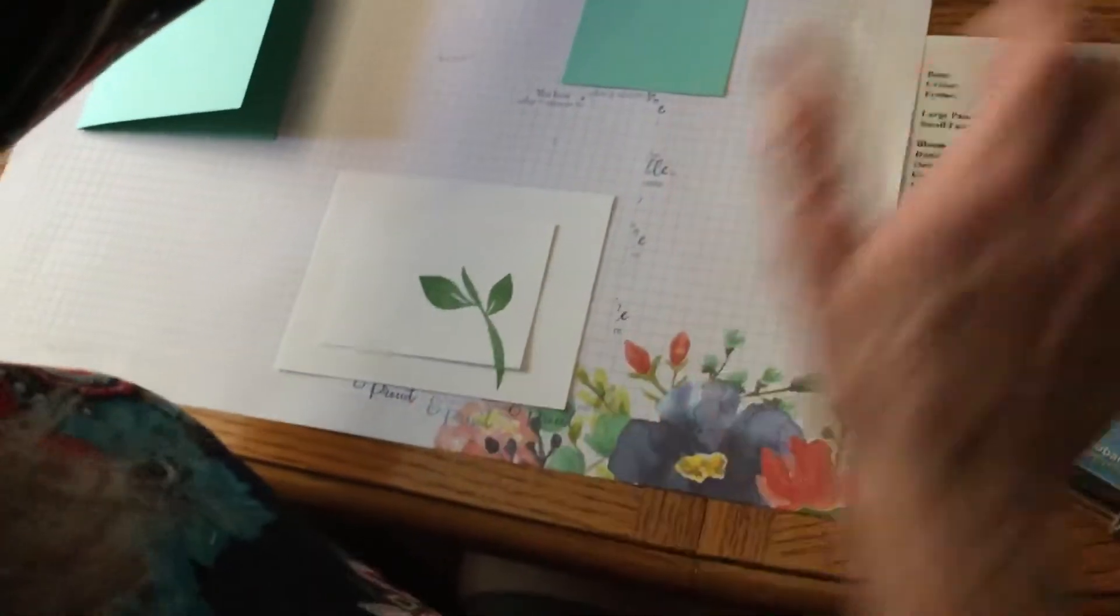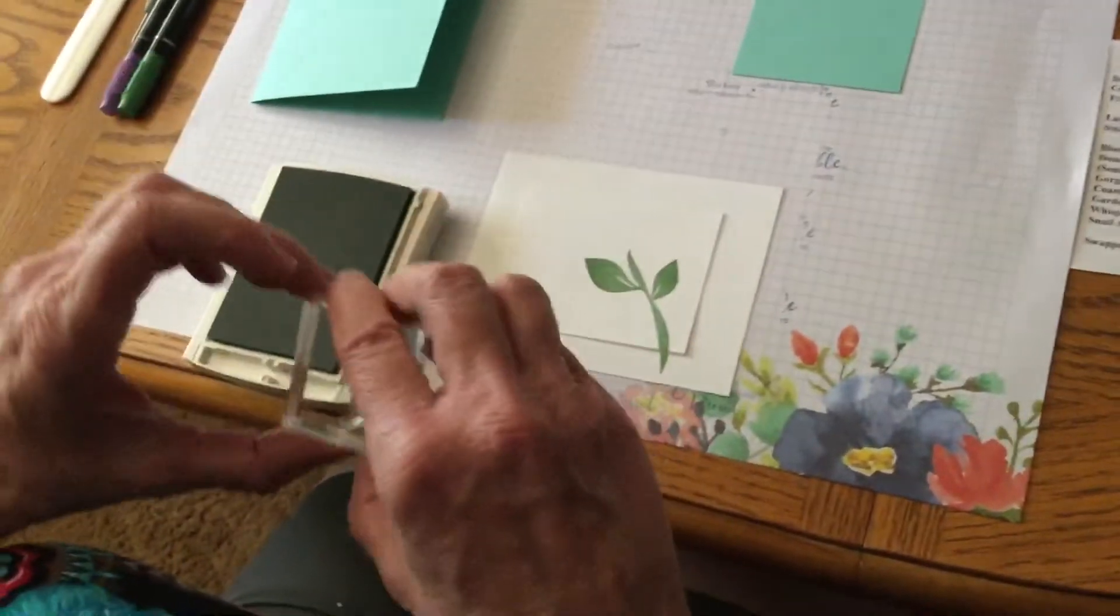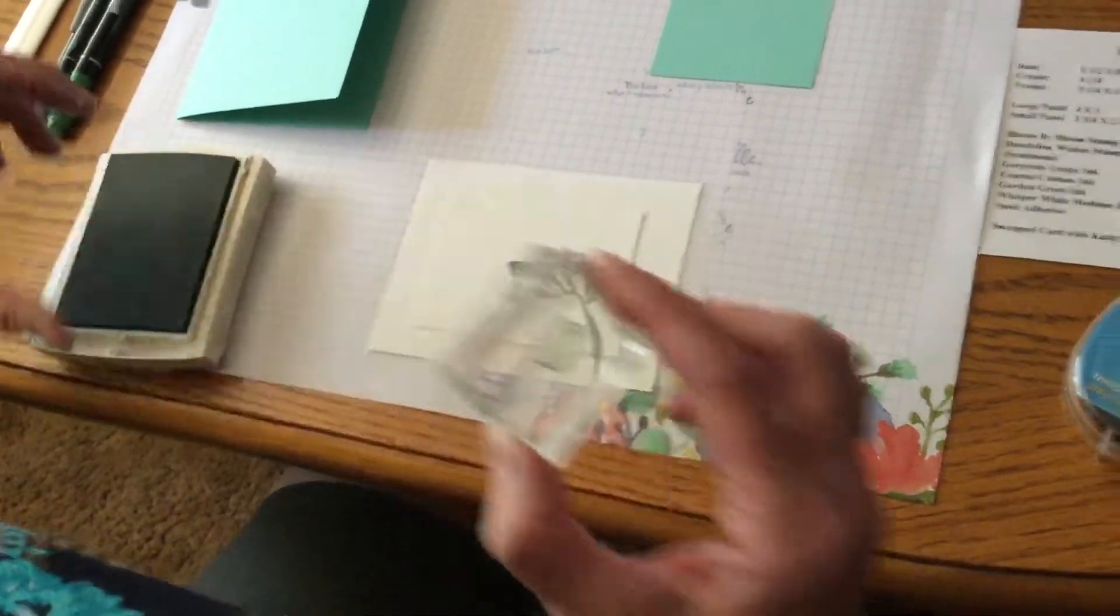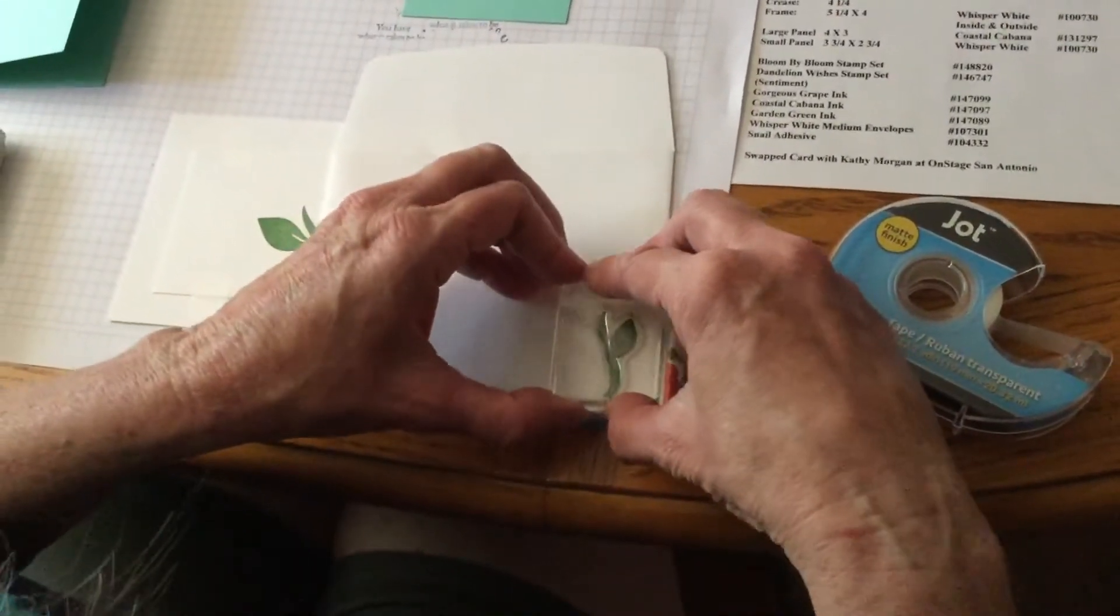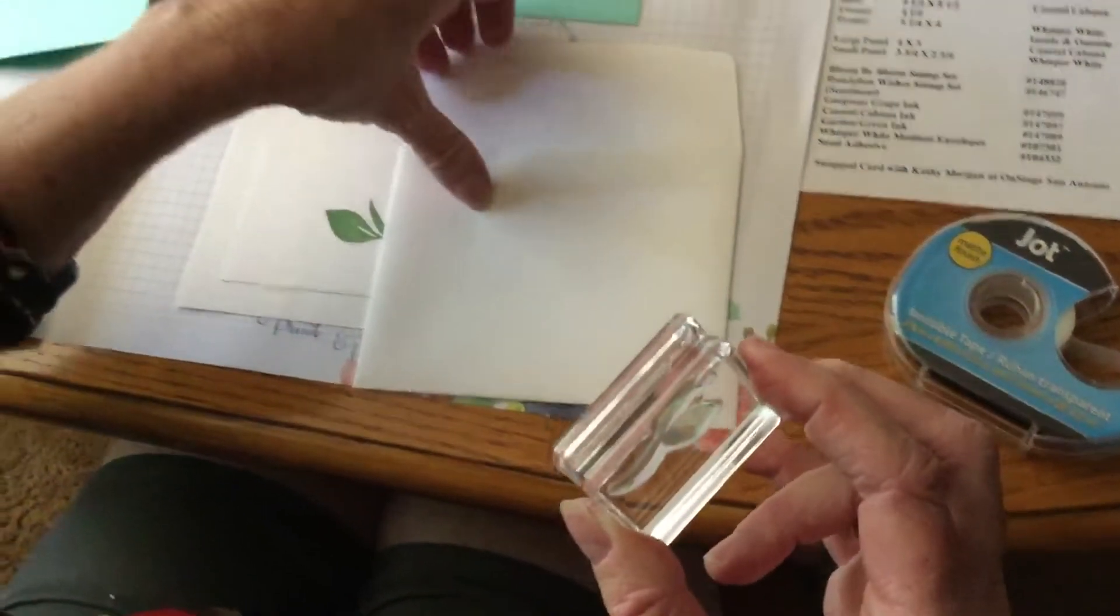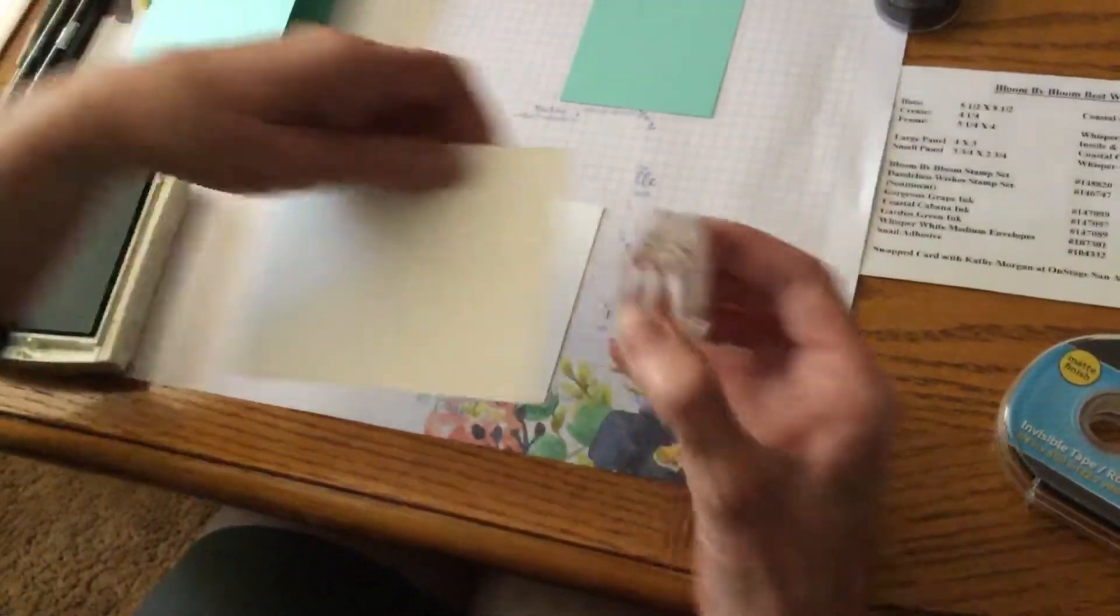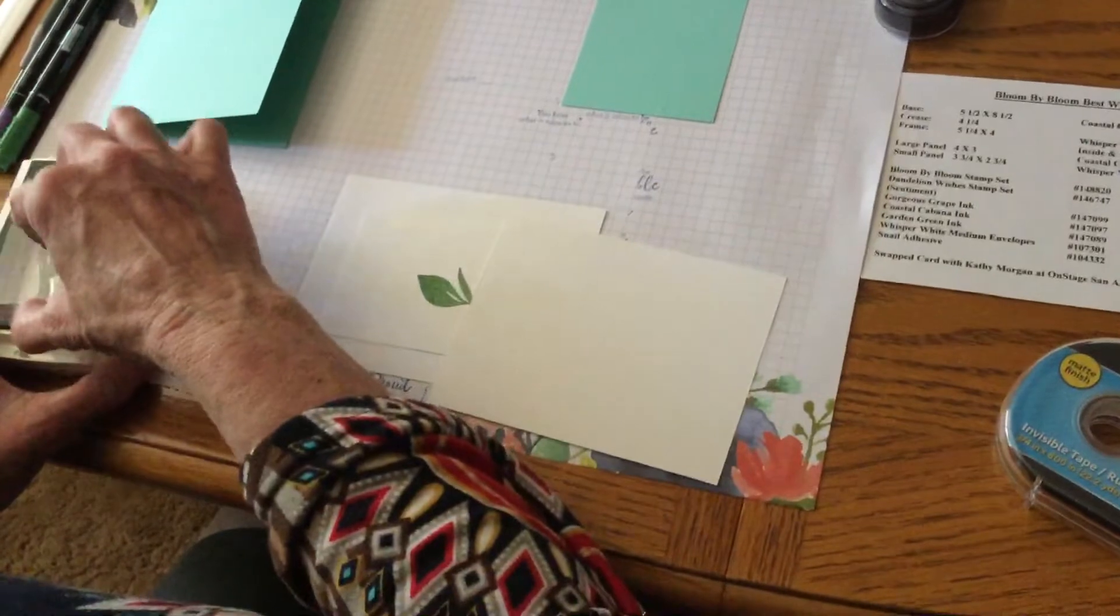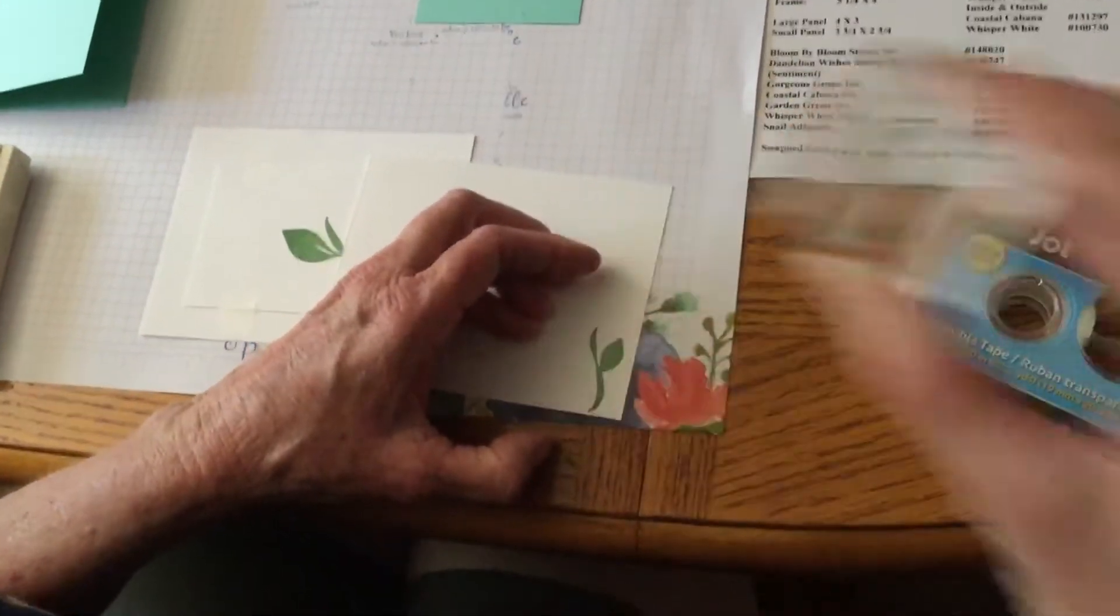So while I've got my Garden Green out, I'm going to go ahead and use the smaller stem and ink, and I'm going to use it on our envelope, the outside of my envelope. I'm going to put that, I think I need a little more ink here. There we go. And then we're going to do the inside, and be sure, we're making our cards sideways, so be sure and make sure your cardstock is lined up the right way. And there we go. So now we're through with our Garden Green.